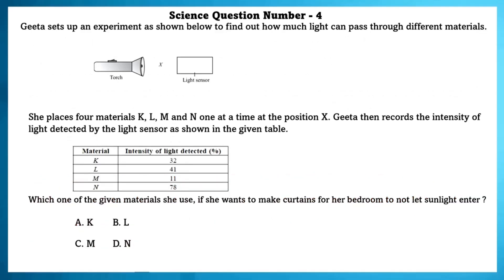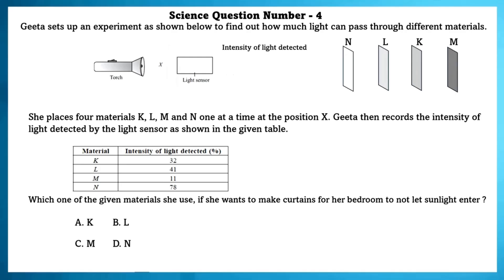Science question number 4. Geeta set up an experiment to find out how much light can pass through different materials. She placed 4 materials — K, L, M and N — one at a time at position X, then recorded the intensity of light detected by the light sensor as shown in the table. Since in a bedroom we don't want light to enter, we need the lesser intensity material, which is material M.